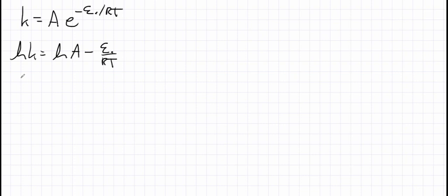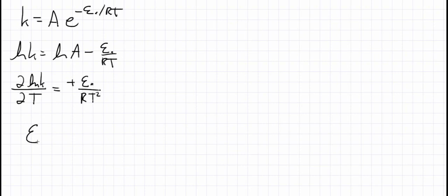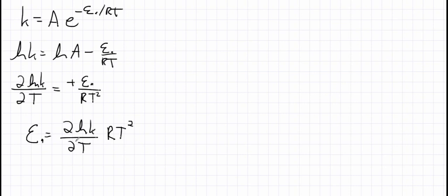If we take the derivative of the log of the rate constant with respect to temperature, we can see that the pre-exponential term is constant. Taking the derivative of the Ea/RT term with respect to T — because it's a negative exponent — we get a positive Ea over RT squared. So the activation energy can be defined as the derivative of the log of the rate constant with respect to temperature times RT squared.